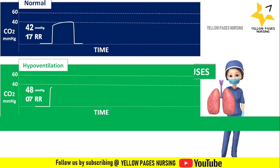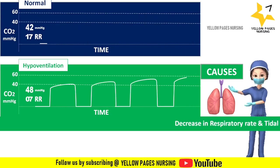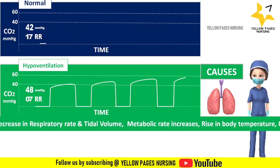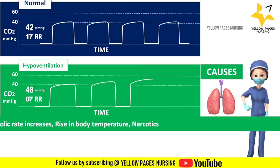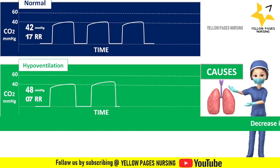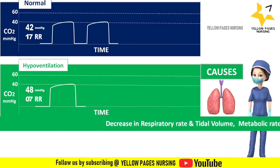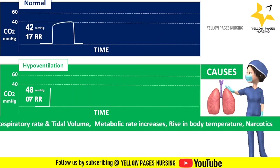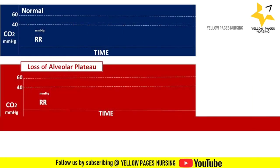Next comes the hypoventilation waveform. In this waveform, the ETCO2 value gradually increases because the respiratory rate decreases. The reasons include decreased respiratory rate and tidal volume, increased metabolic rate, rise in body temperature, narcotic overdose, heavy sedation, and CNS dysfunction.